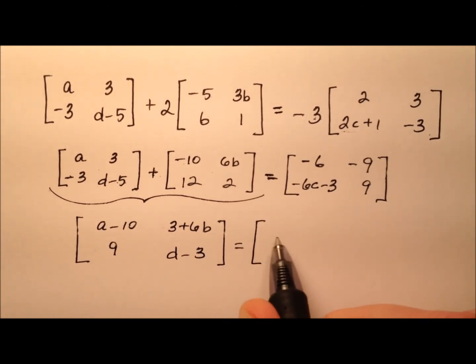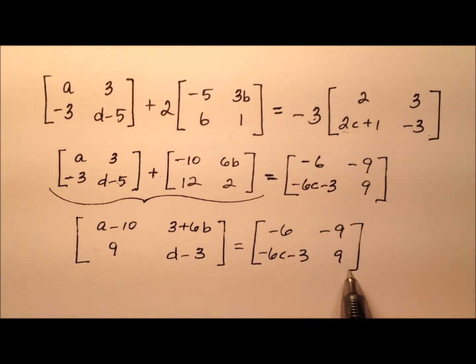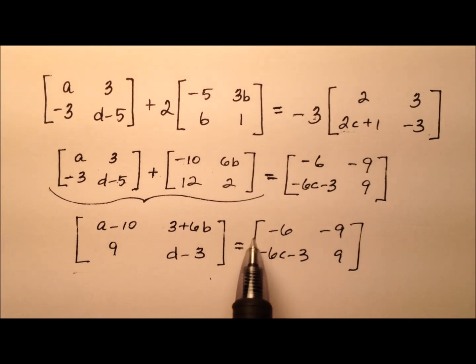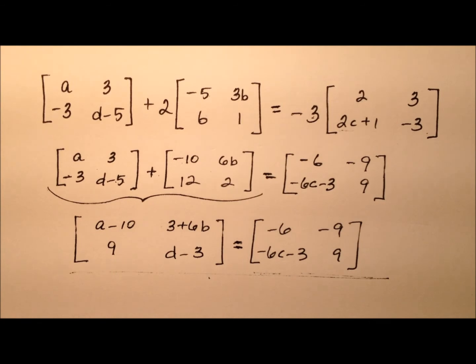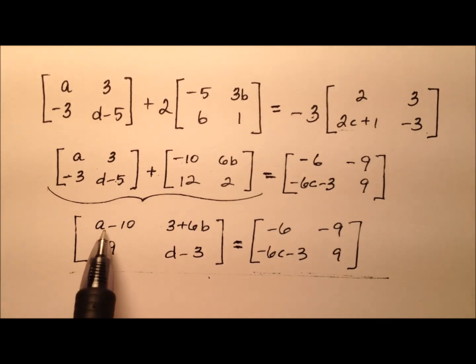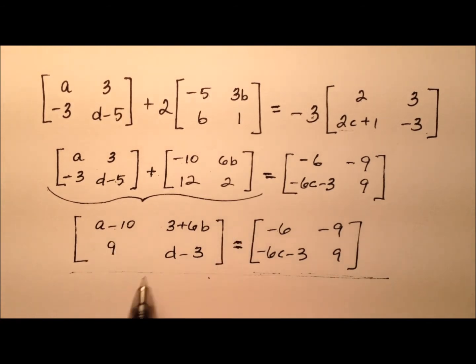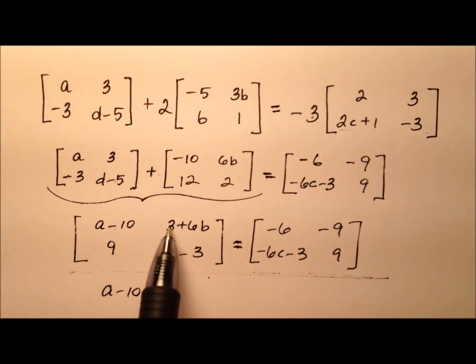And we see that now we have a couple of equivalent matrices. So we have this 2 by 2 on the left side equivalent to this 2 by 2 on the right side. So I know that when I have equivalent matrices, that their corresponding entries will also be equal. So I'm just going to go one entry at a time and set them equal to each other. So A minus 10 equals negative 6. 3 plus 6B equals negative 9.